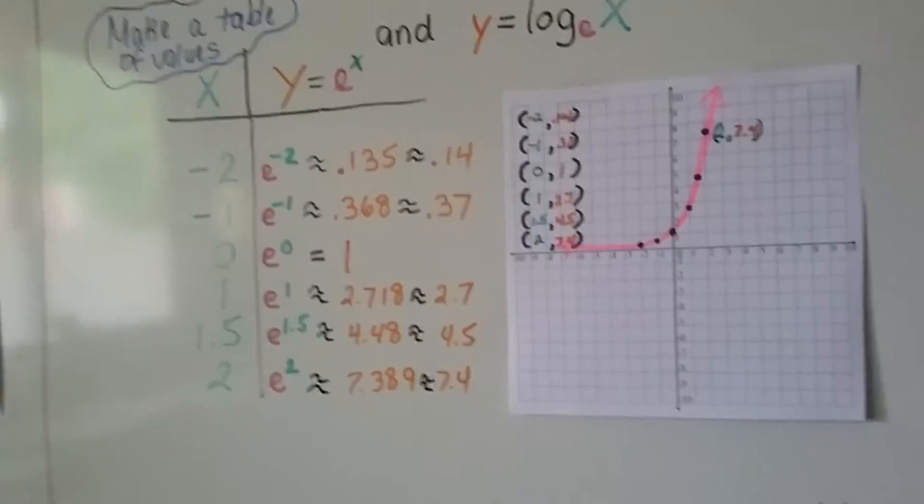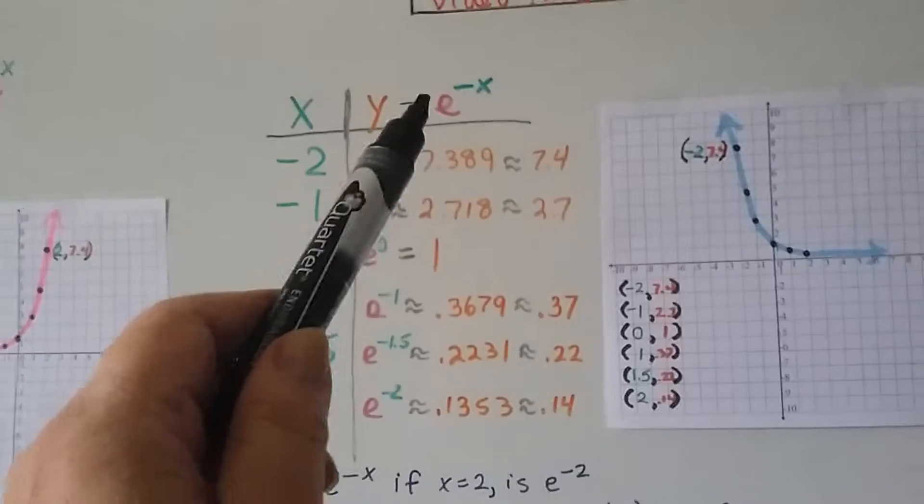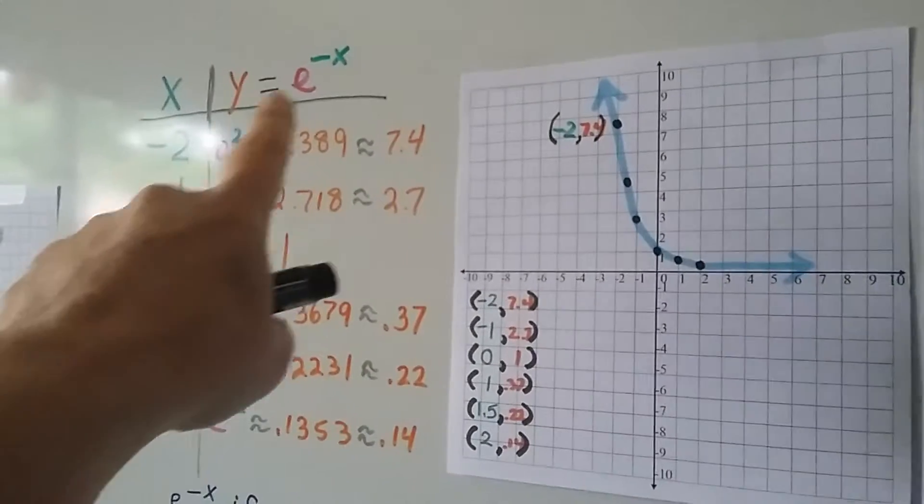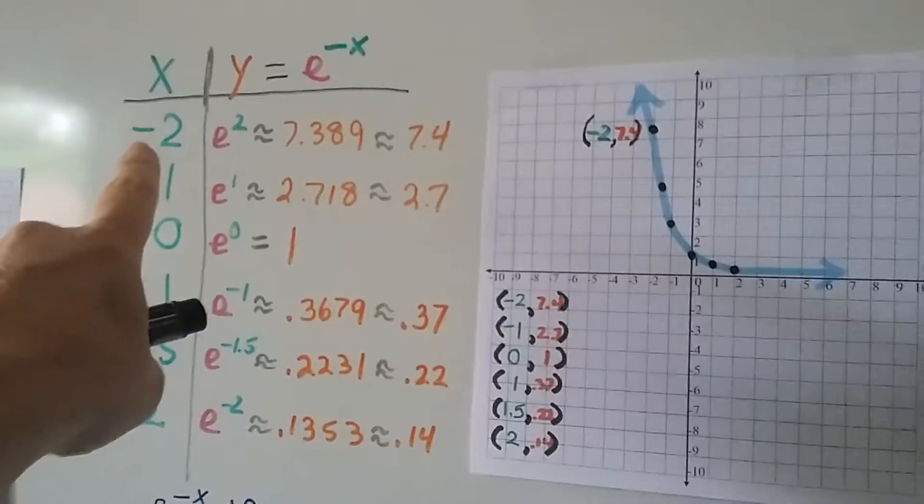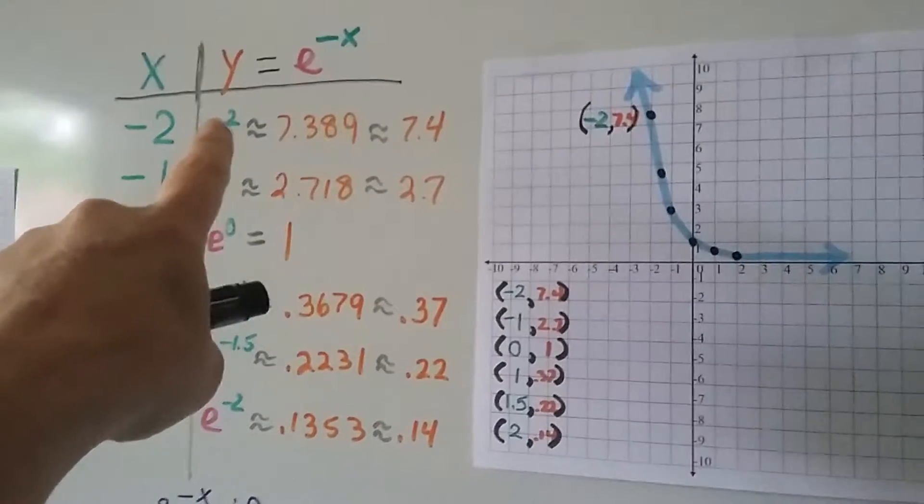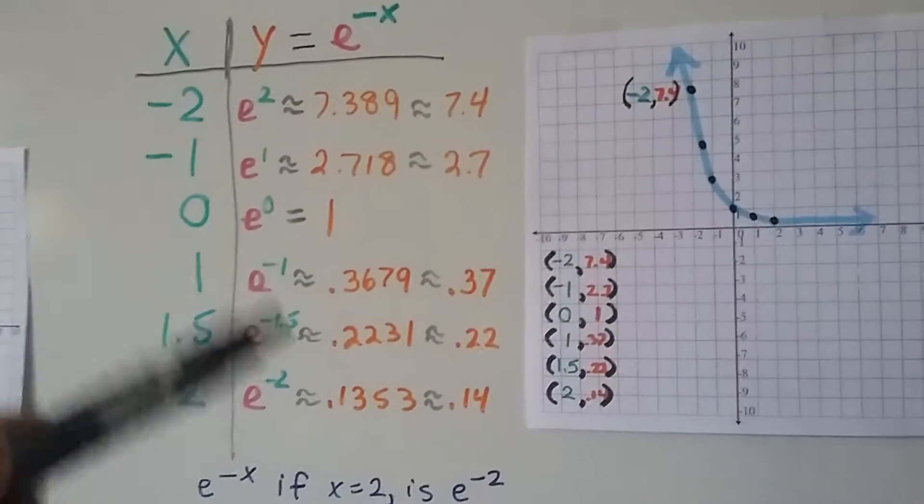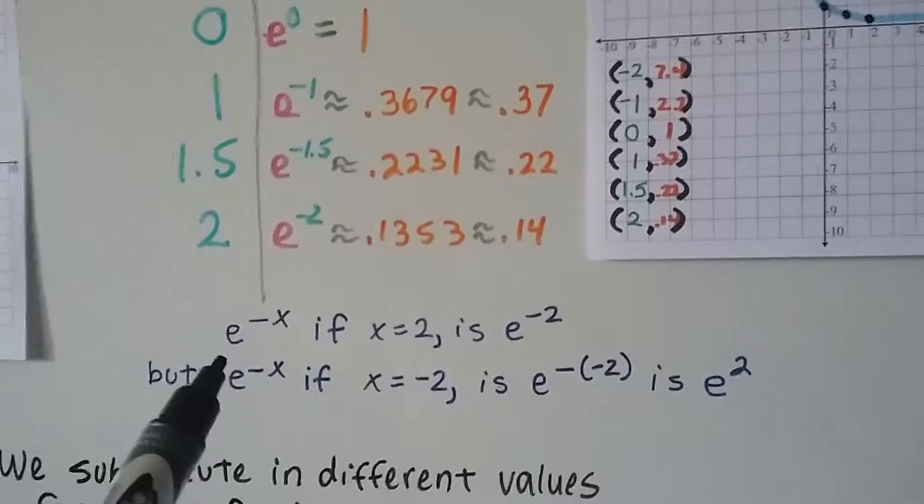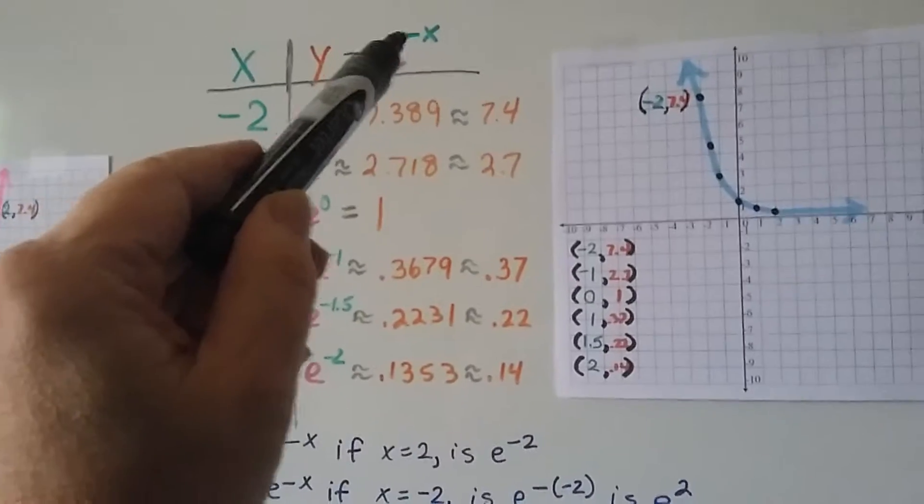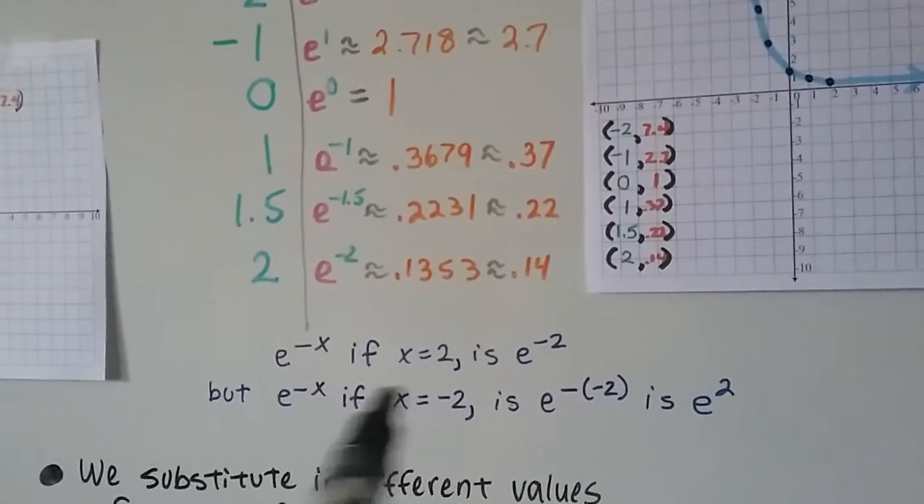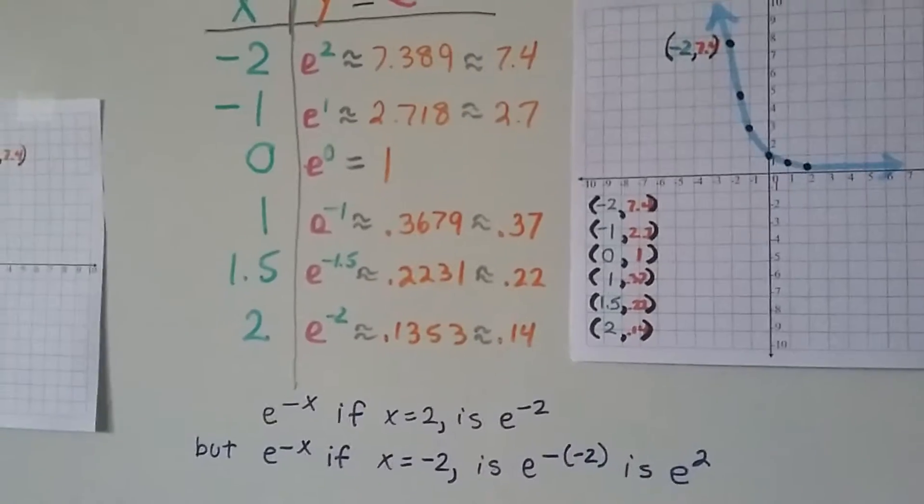If we're doing an inverse of x, we just use that column for the inverse of x and find our values. If x is a negative 2, well, then we've got the inverse of that. That means we've got e squared, which is a 7.4. If x is a negative 1, then that means we have a 1. What's happening is, if we've got the inverse right here, if we've got a negative x up here, and this is a negative 1 or a negative 2, it's saying we've got the negative of the negative, and that's how it ended up being a positive.